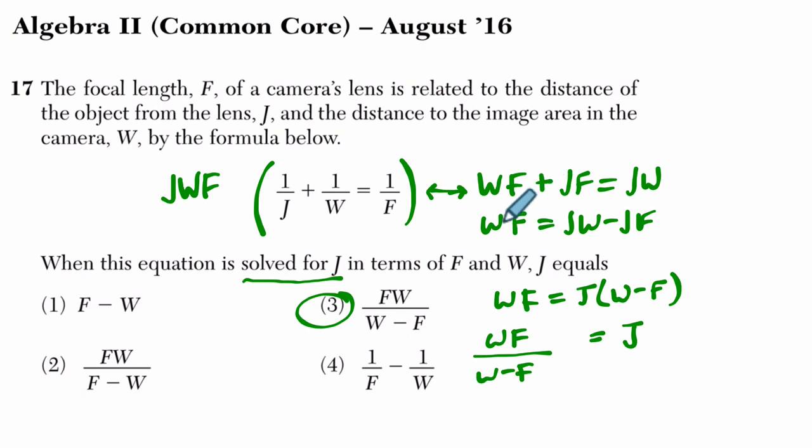Okay. And then it means w, f equals j, w minus j, f. Correct. W, f equals, sorry, factoring out j. Yep, that looks right to me.